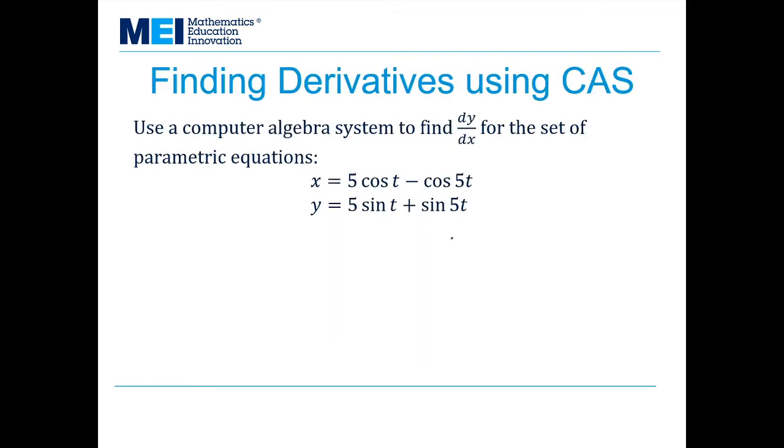We're going to have a go at this and find the derivatives for this set of parametric equations here: x equals 5 cos t minus cos 5t, and y equals 5 sin t plus sin 5t.